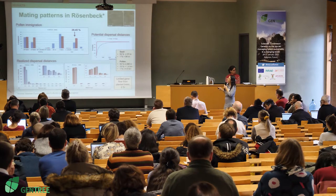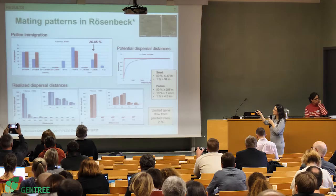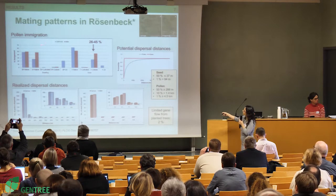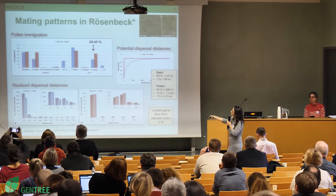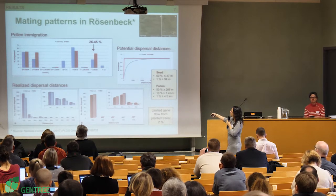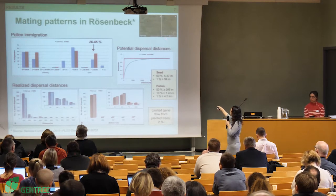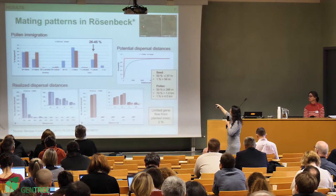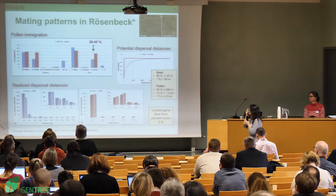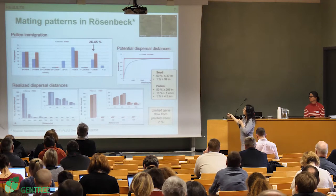Looking at the results: first, mating patterns and dispersal at the German fragmented site. When we look at the first graph, we see that most parents of the seedlings and seeds were native trees in the site — not the elite trees. There was very limited gene flow, only about 2%, from the cultivated trees.